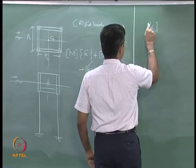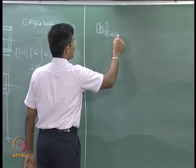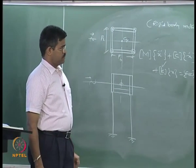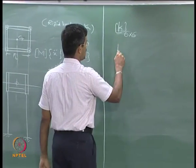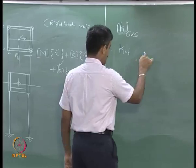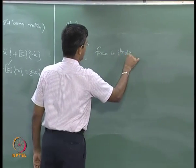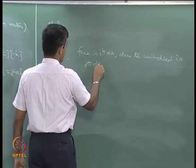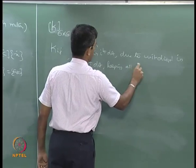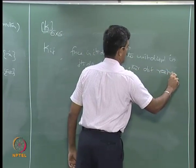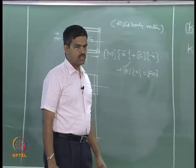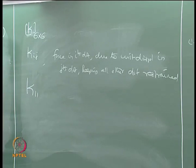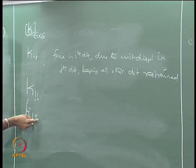The stiffness matrix — there are 6 degrees of freedom, so it is expected to be a 6×6 matrix. To find the coefficient of stiffness matrix K_ij, it is the force in the i-th degree of freedom due to unit displacement in the j-th degree of freedom, keeping all other degrees of freedom restrained. For example, to find K₁₁, I must give unit displacement in the first degree and find the forces in the first degree.